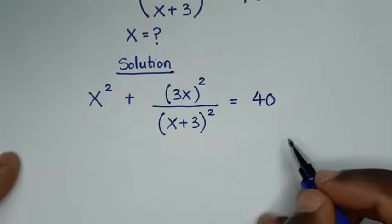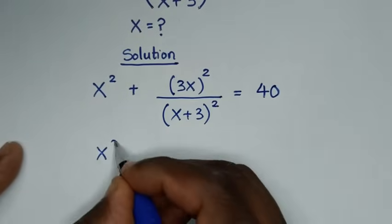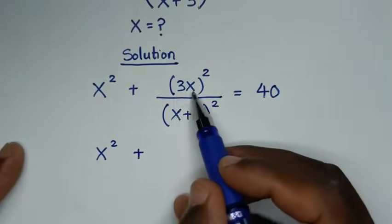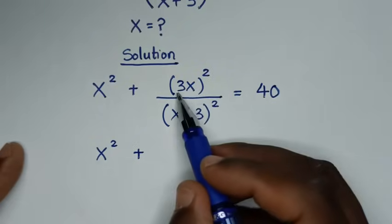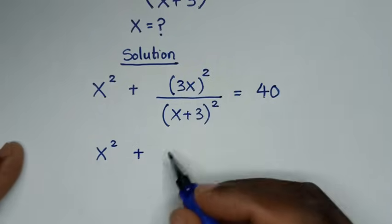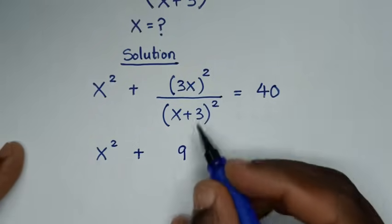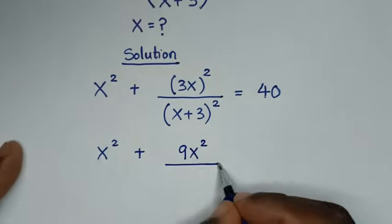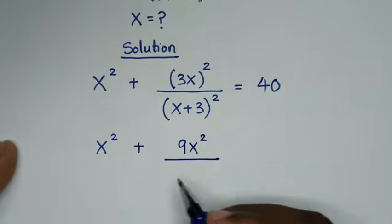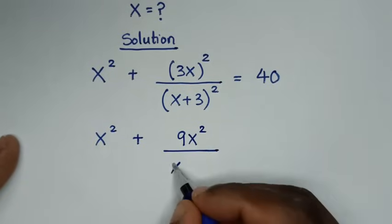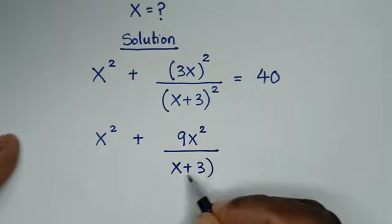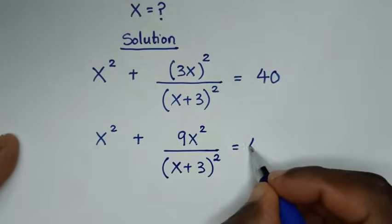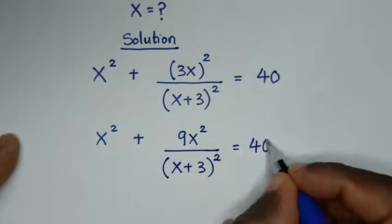Then it will be x squared plus (3x)² — so 3 squared is 9, giving us 9x squared — then over (x + 3)² is equal to 40.